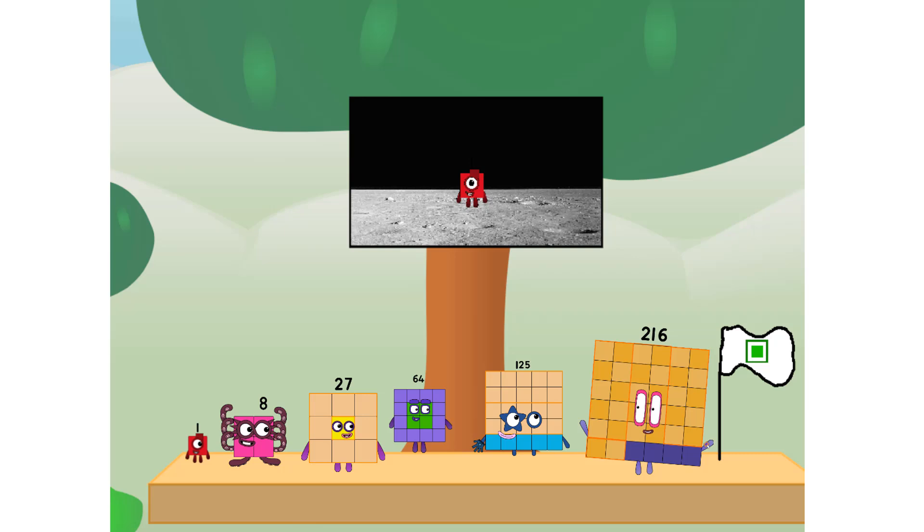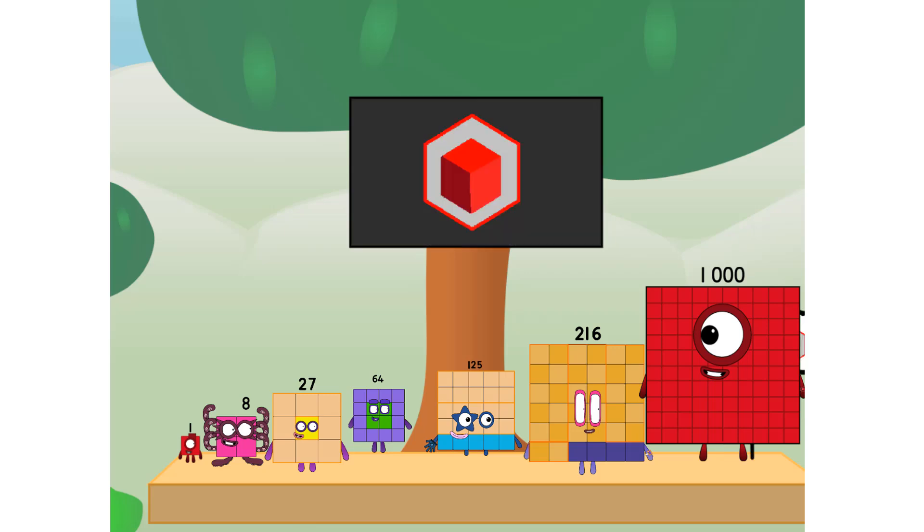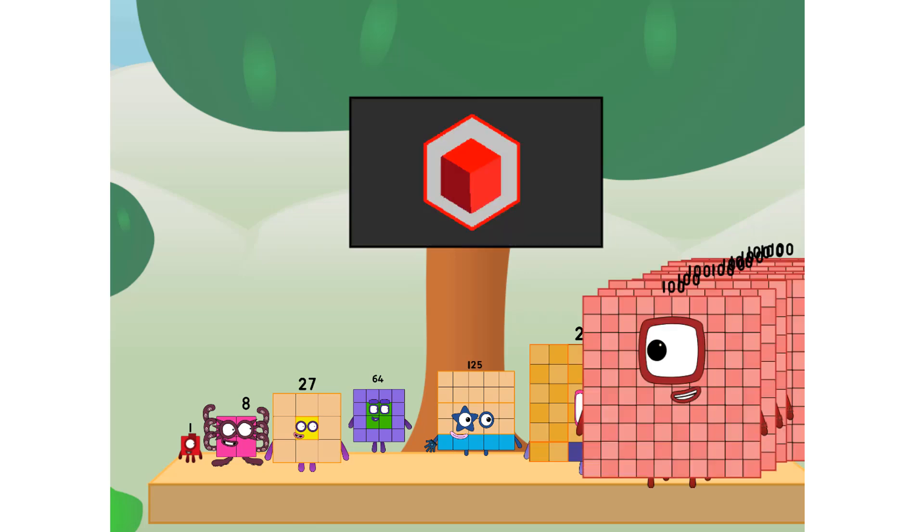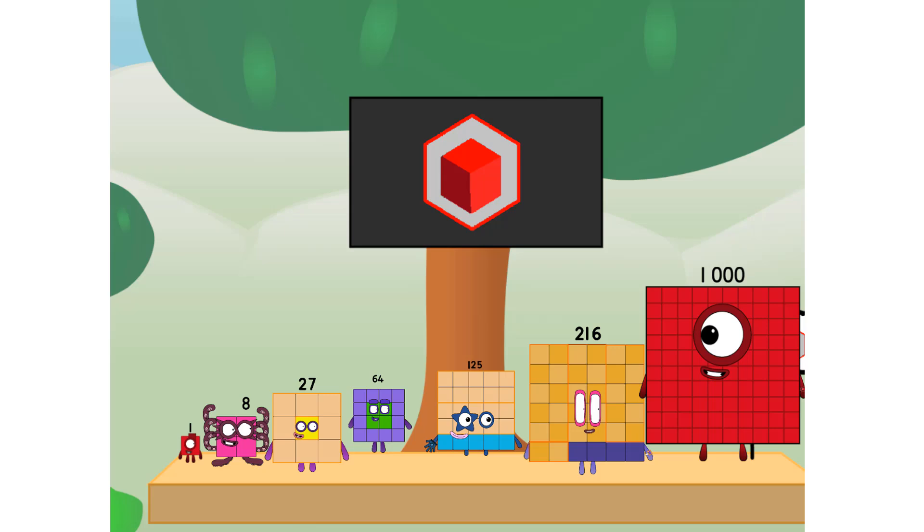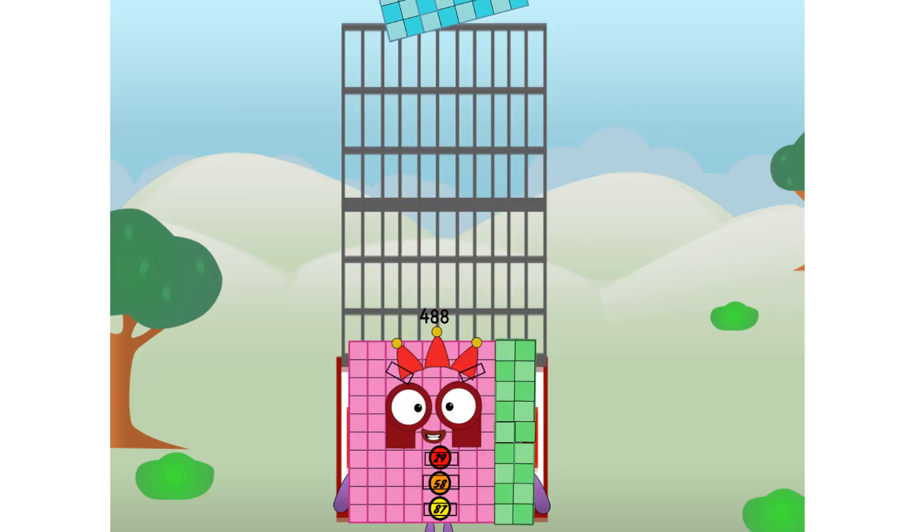We did it. The only thing left now is to plant the cube club flag. Numberland, we have a problem. I forgot the flag. Don't worry, little one, I'll take care of this. 1000. And I promise, no square power, cube power only.